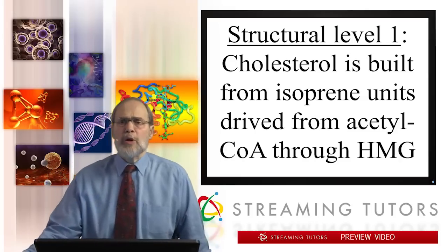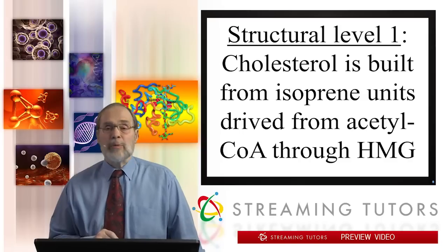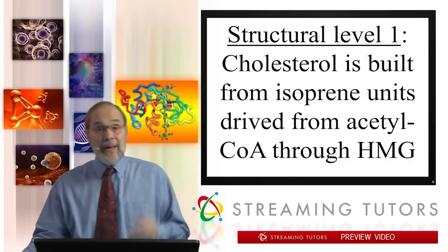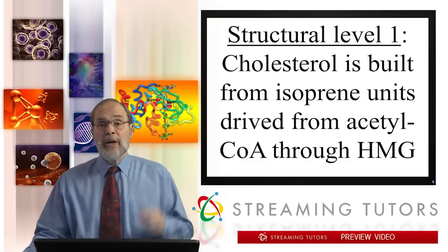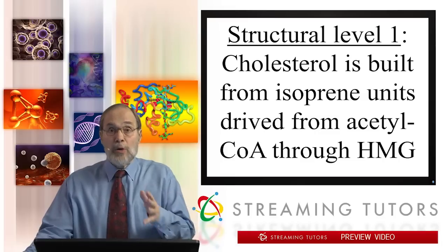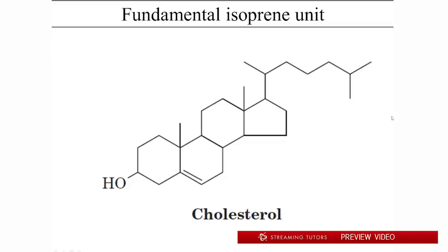So let's look at the first structural level. As we'll see, cholesterol is built from what are called isoprene units — we've encountered them in passing before. They are in turn derived from acetyl-CoA, a molecule we're very familiar with, through HMG — hydroxymethylglutaryl-CoA — as you'll see in the next couple of minutes. Here again is cholesterol. It's made up of a whole string of isoprene units strung together to make a long linear chain, and then parts of that chain are bonded to make the cyclic components of the cholesterol molecule.